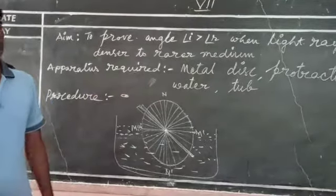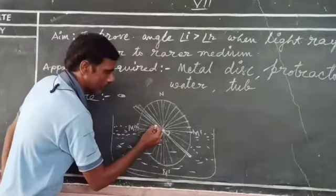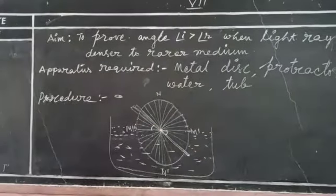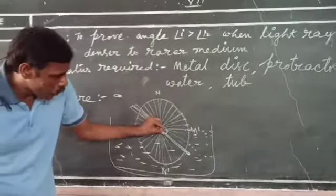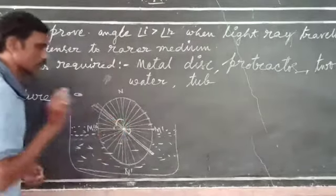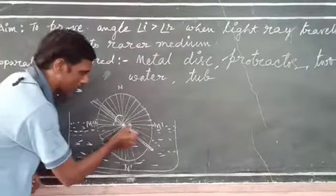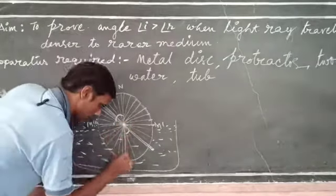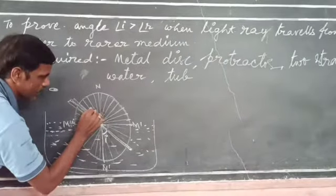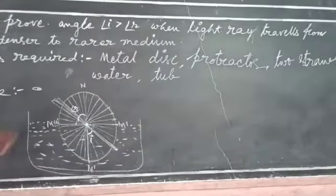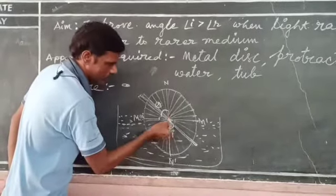Now take out the metal disc from the water. Try to find out the angle of incidence and angle of refraction. You can observe that the angle of incidence is the angle between the normal and the straw immersed in water. The angle of refraction corresponds to the straw out of the water. By taking out the metal disc from the water, you can note the angle of incidence and angle of refraction.